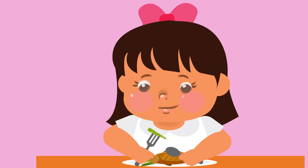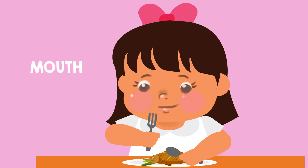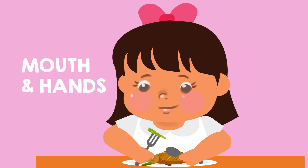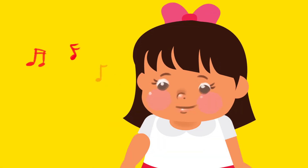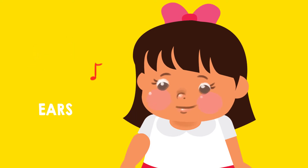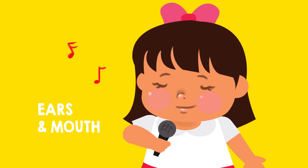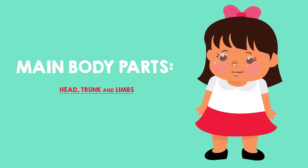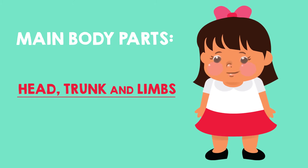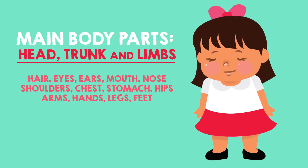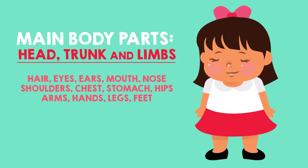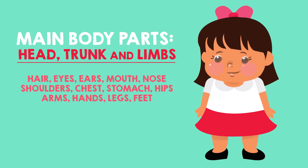When we eat, what body parts do we use? That's right — we use our mouths to chew our food and even our hands to hold our spoon and forks. How about when we listen to music? We use our ears to hear the music, and we can also use our mouths to sing along. Again, we have our main body parts: the head, trunk, and limbs. But they also have more specific body parts too. Each does different tasks, but they all work together when we do things.